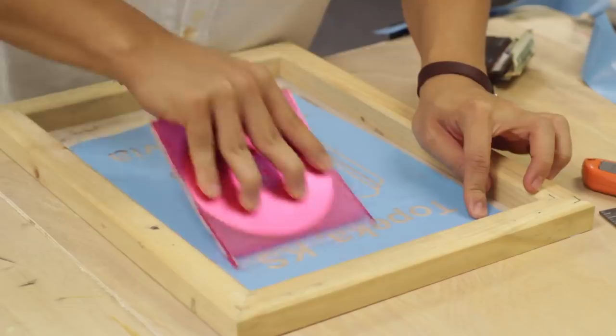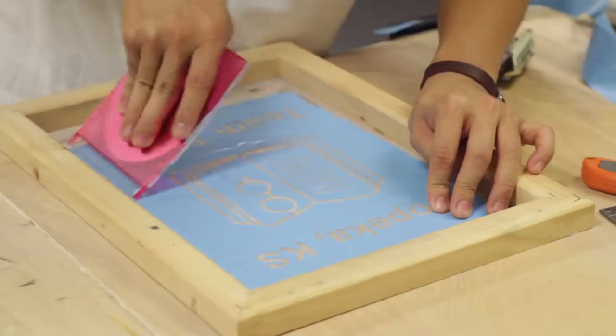Once that's all off, I just lay it down on the screen, and then use a CD to get out all the air bubbles. And you're going to see that it's reversed because we're going to print through the screen. You want your image reversed here.